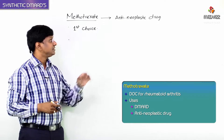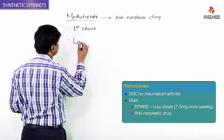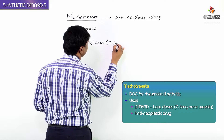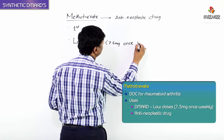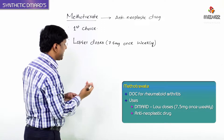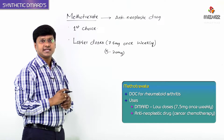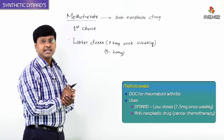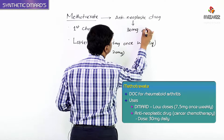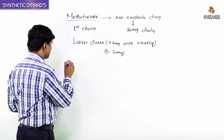What is the difference between the two uses? In rheumatoid arthritis, methotrexate is used in lower doses — 7.5 milligrams once weekly, with the dose ranging from 5 to 20 milligrams once weekly. In contrast, as an anti-neoplastic drug in cancer chemotherapy, it is used at 30 milligrams daily.